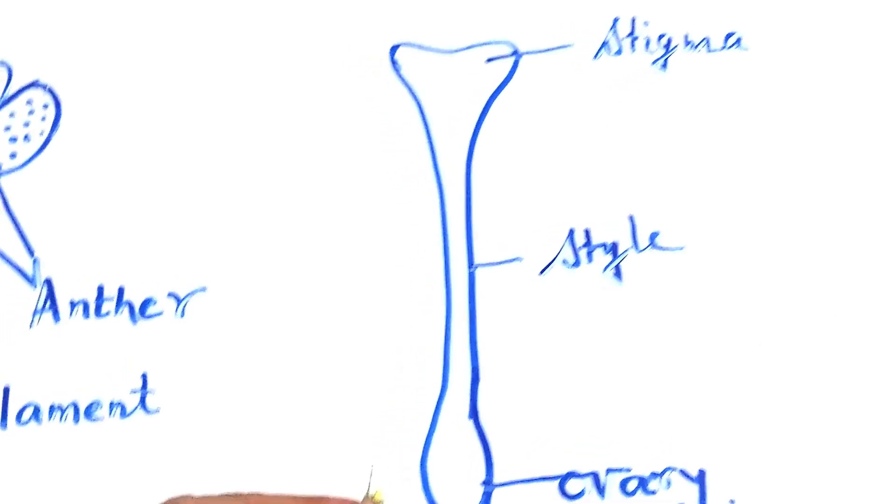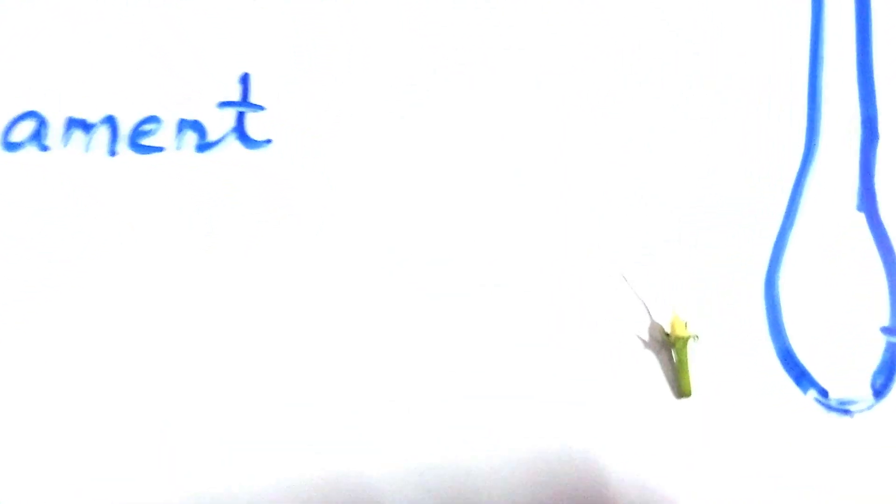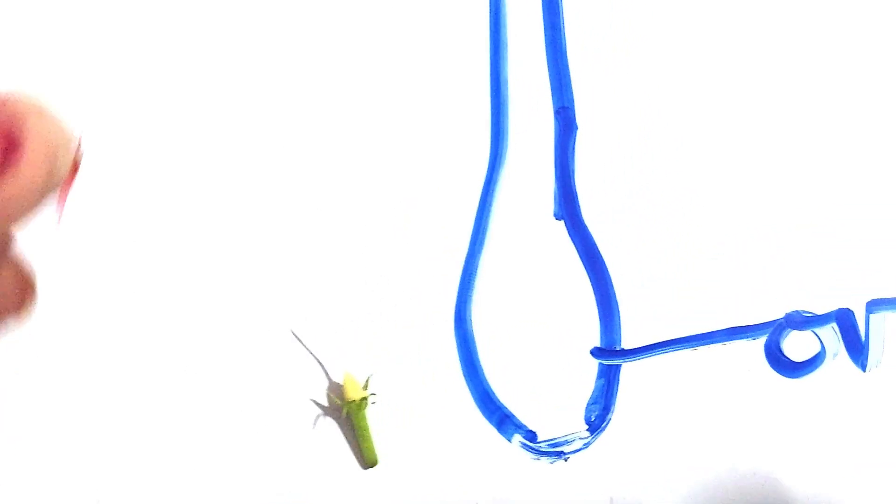You can see it very well. This is called the ovary. And here you can see this is the stigma, the uppermost portion of the carpel.